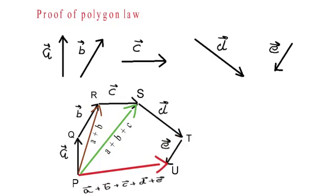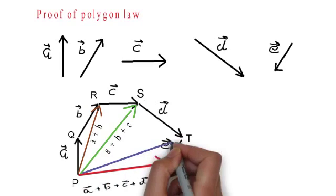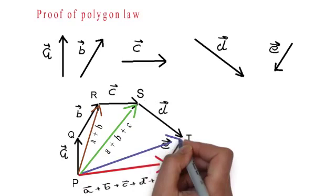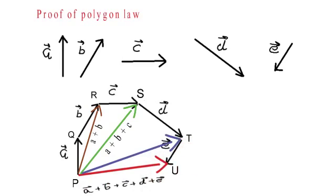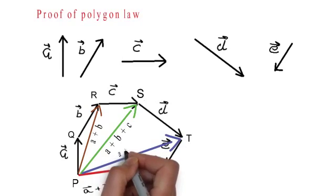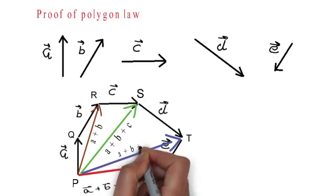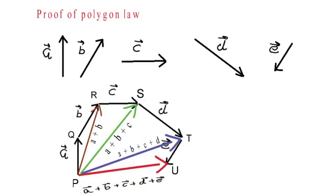Now if we look at the three points P, S, and T, they also form a triangle. In this triangle, PS vector plus ST vector will be equal to PT vector. But PS vector is equal to A vector plus B vector plus C vector. Therefore, PT vector will be equal to A vector plus B vector plus C vector plus D vector.